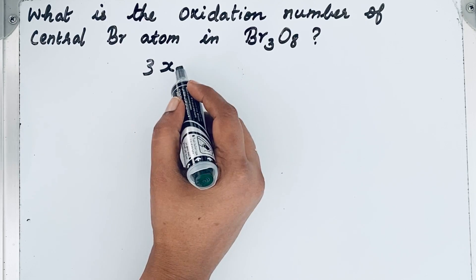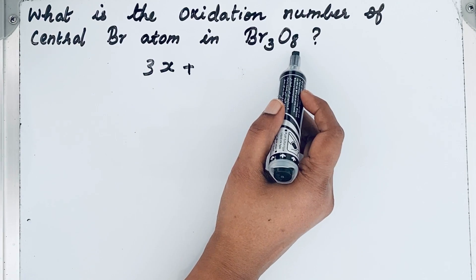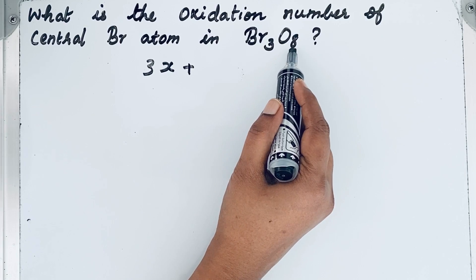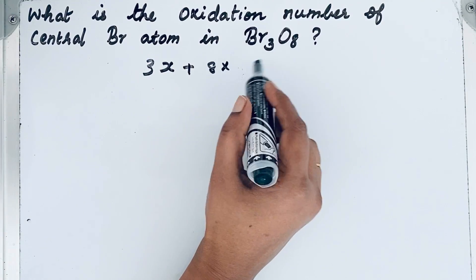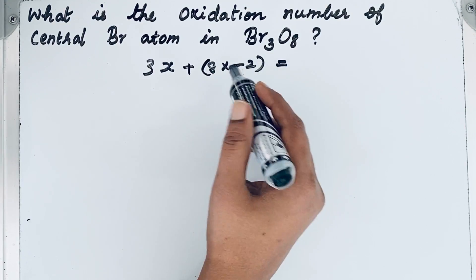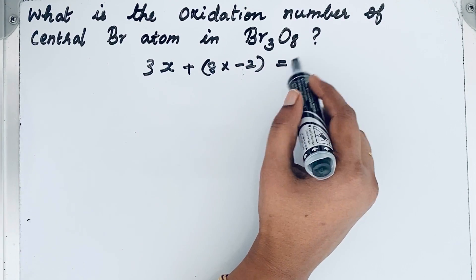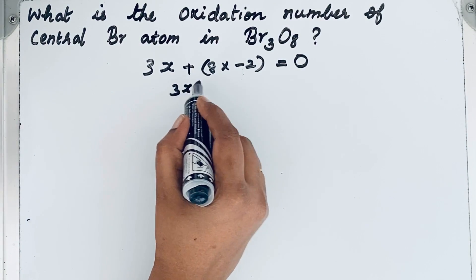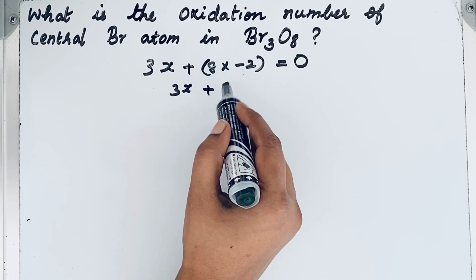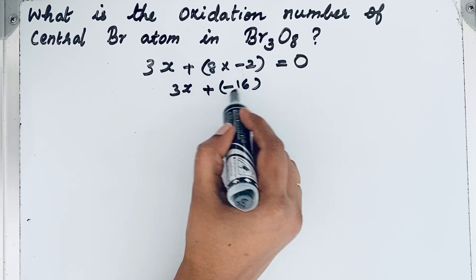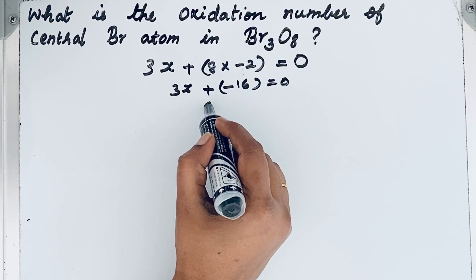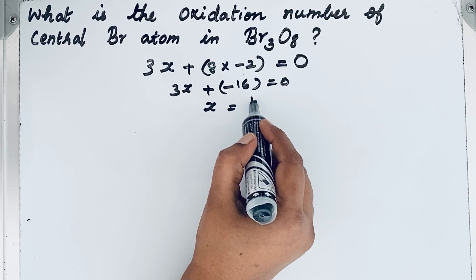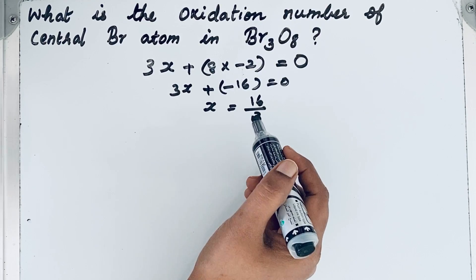For oxygen — except in peroxides and superoxides — the oxidation number is minus 2 in all other compounds. There are eight oxygen atoms, so that gives 8 × (−2) = −16. Since the compound is neutral, the sum must be zero: 3x + (−16) = 0, which gives x = +16/3. This is a fraction, but in reality electrons cannot be shared in fractions.